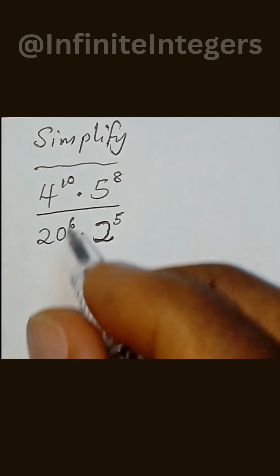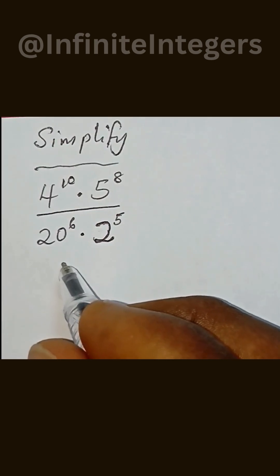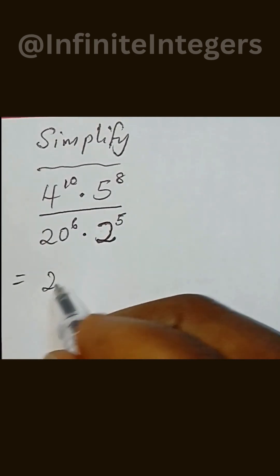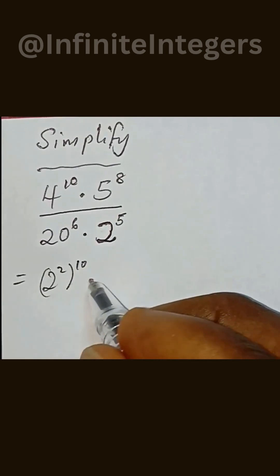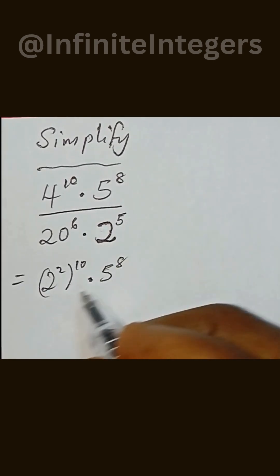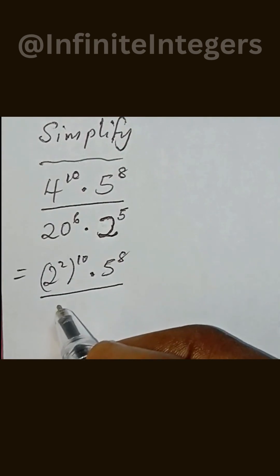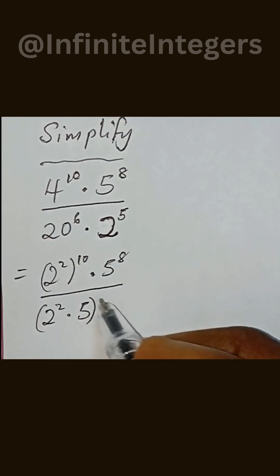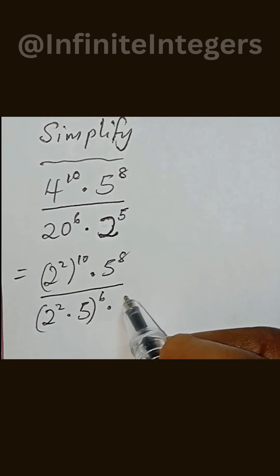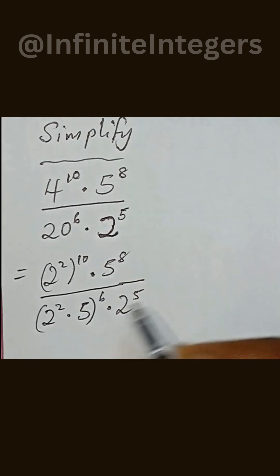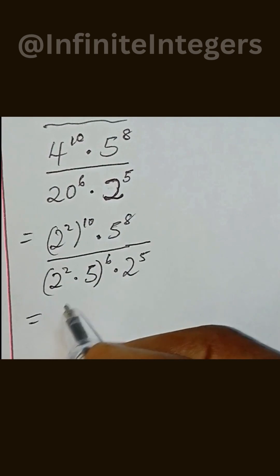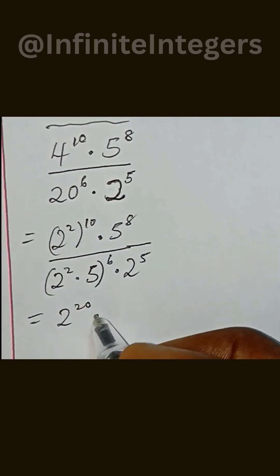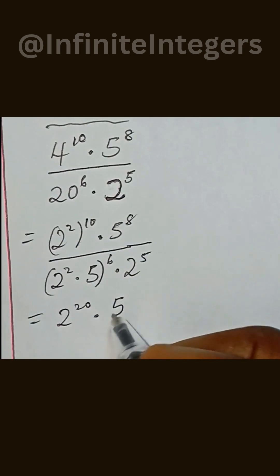So let's simplify this. We can write this as equal to 2 to the power of 2 to the power of 10, multiply by 5 to the power of 8, over 2 to the power of 2 multiply by 5, all in brackets to the power of 6, multiply by 2 to the power of 5. If we expand this, we have 2 to the power of 20 multiply by 5 to the power of 8.